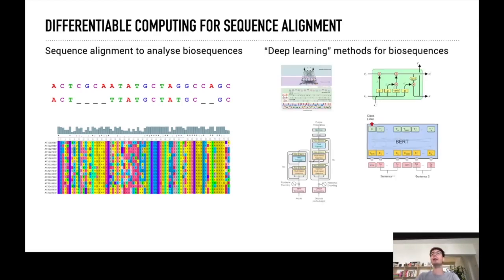But more recently people have been using a lot of deep learning as well, and we want to have really the best of both worlds. So we want to use these traditional bioinformatics algorithms but use them in combination with differentiable computing so that we can learn and optimize their behavior.